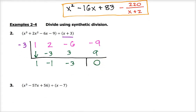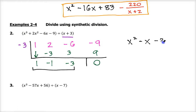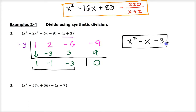We're left with 3 terms before the bar, meaning we have a degree 2 polynomial. It's 1x squared minus 1x minus 3. And because there's a 0 here, that means we have no remainder. So the answer is x squared minus x minus 3.